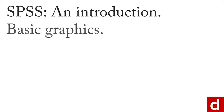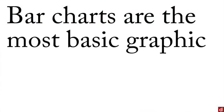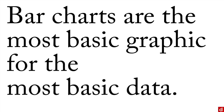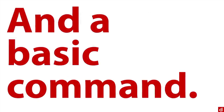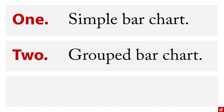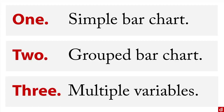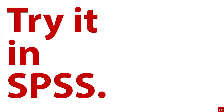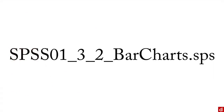The next step is bar charts. We like bar charts for a very simple reason — they're simple, and simple is good. Bar charts are the most basic graphic for the most basic data: just frequencies for a simple category. We have a few options: a simple bar chart for a single variable showing category frequencies; a grouped bar chart broken down by some other variable; and multiple variables showing bars simultaneously. It's really easy — just open up the SPSS syntax file and we'll give it a whirl.